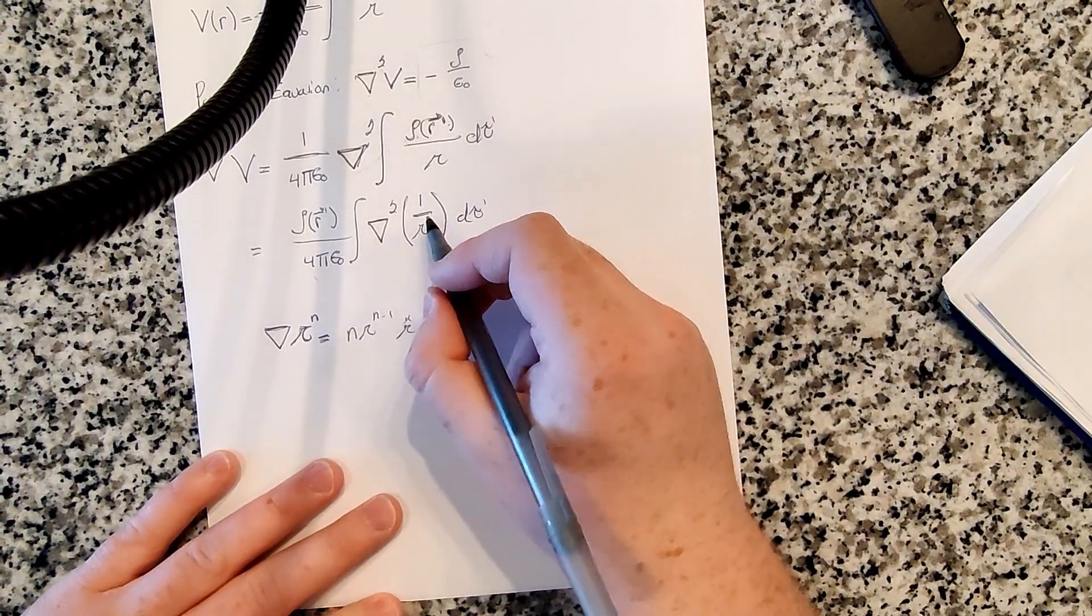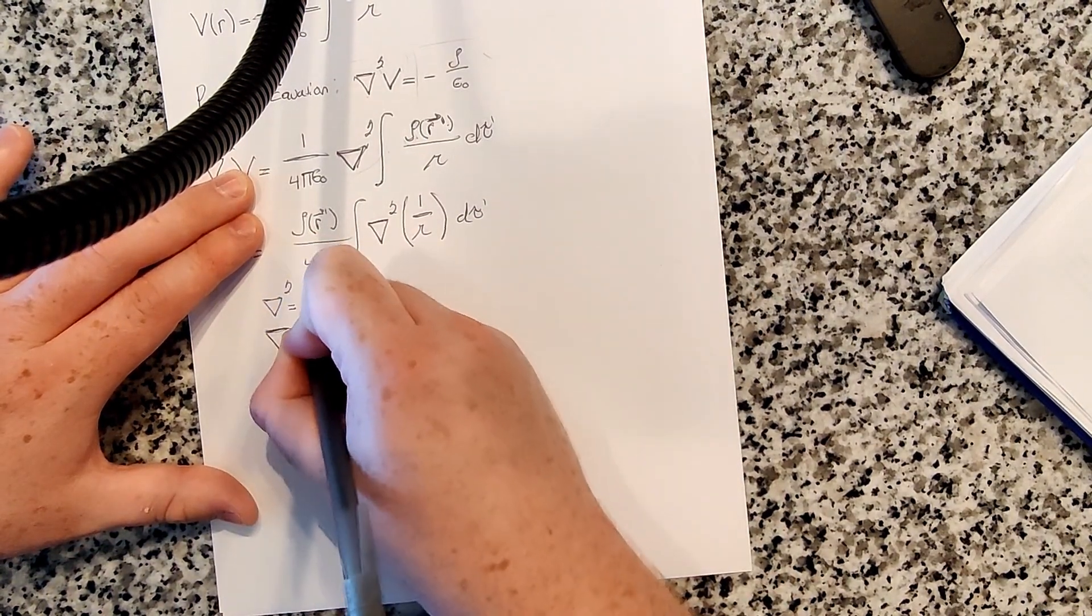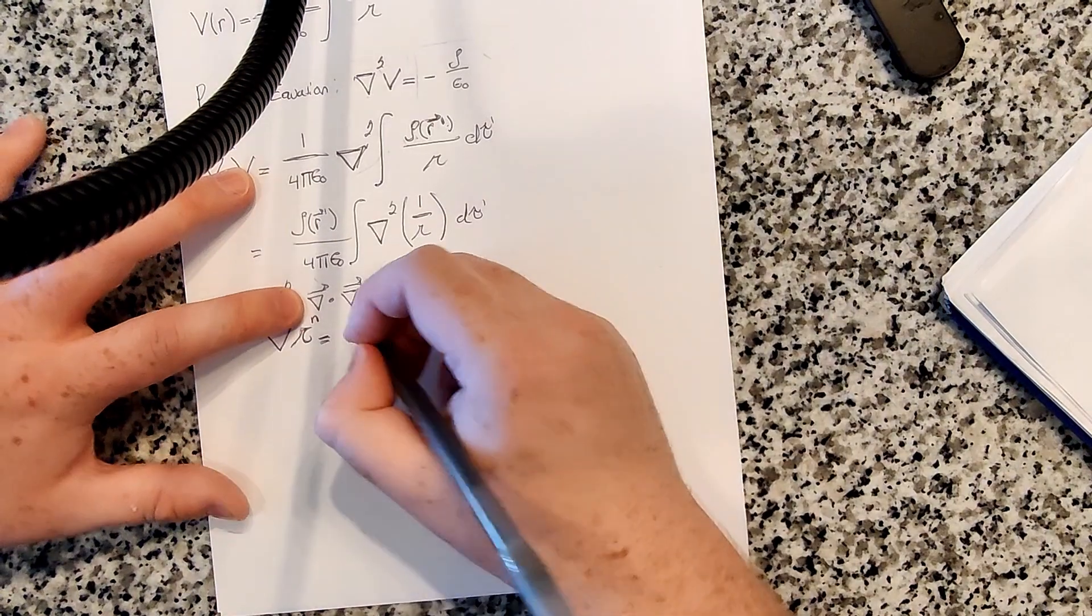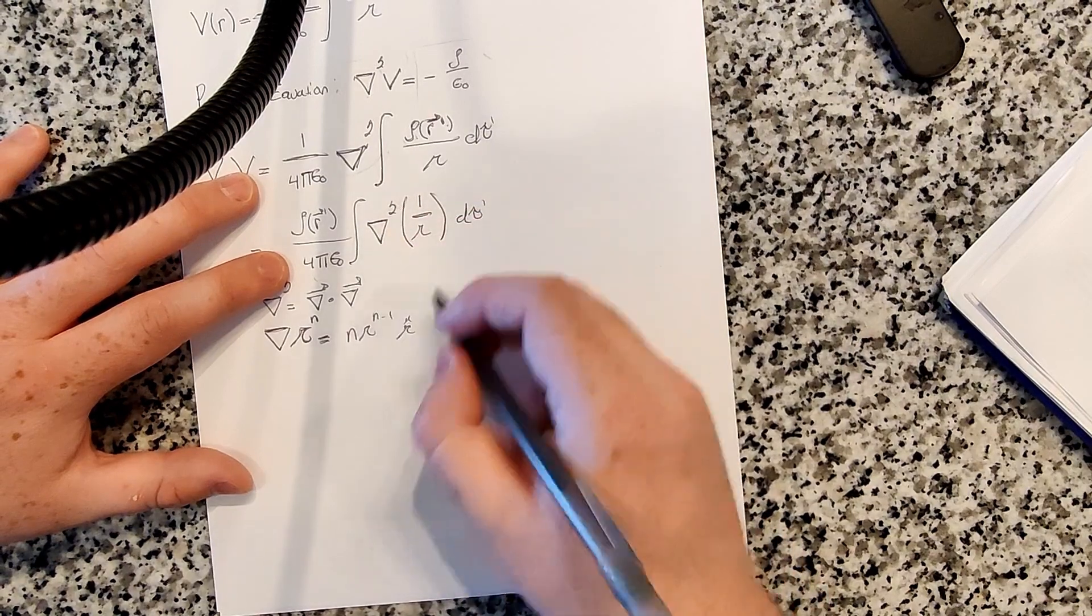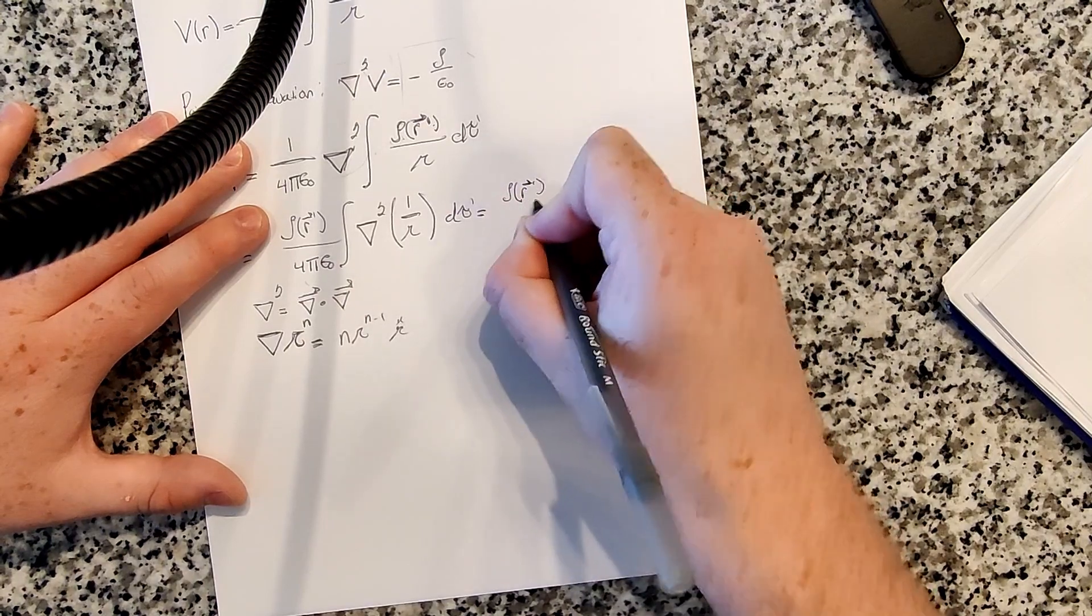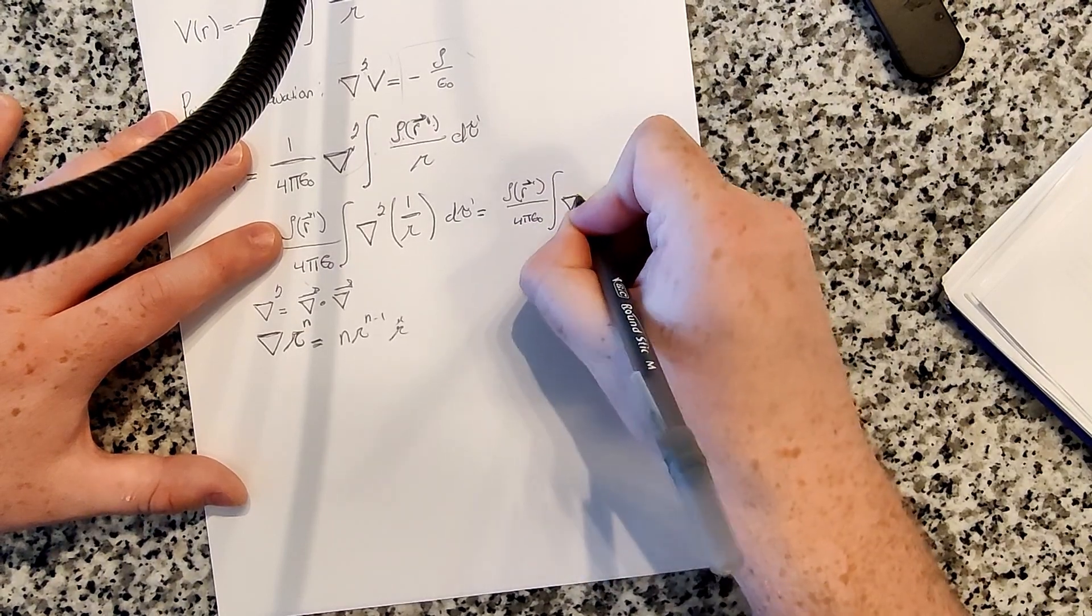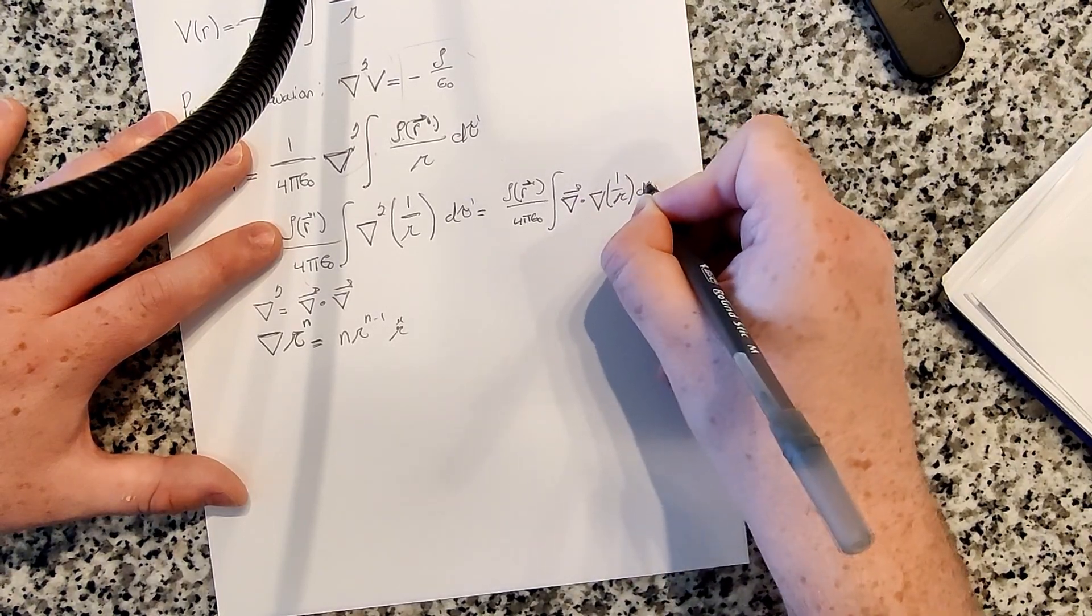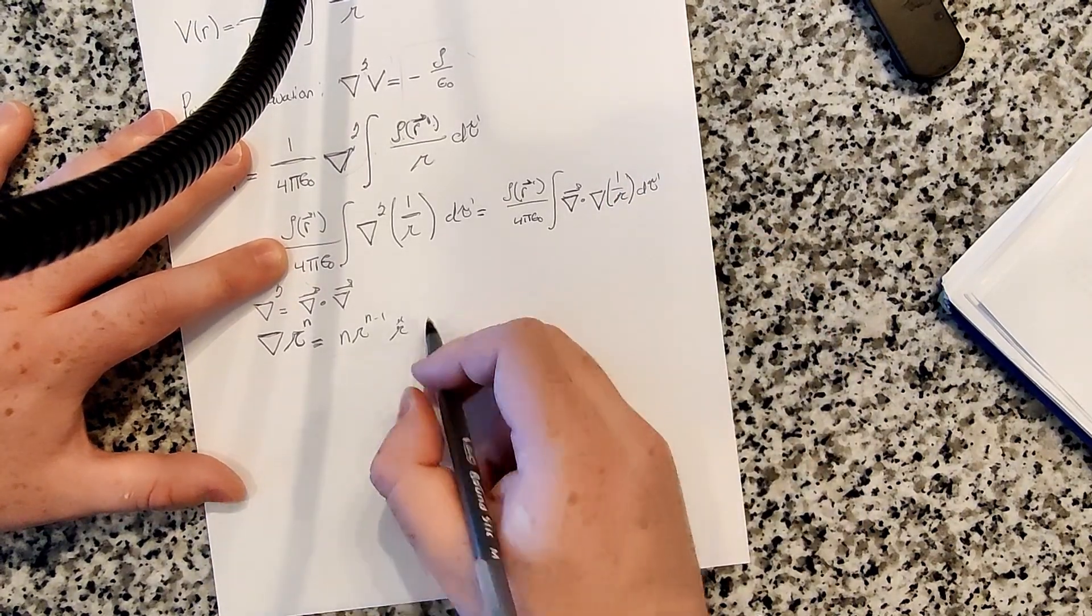Yeah, 1.13 I think is where a lot of these relations come from. So in our case, so the Laplacian, real quick, the Laplacian is defined as the divergence of the gradient, right? And so if we have, like here, we can rewrite this as rho of r prime over 4 pi epsilon naught, the integral of the divergence of the gradient of 1 over r d tau, right? So first we need to evaluate the gradient of 1 over r. And we can do that with this equation, right?